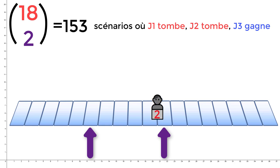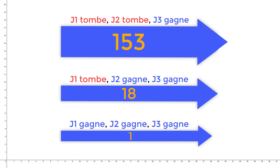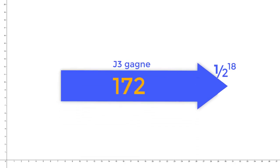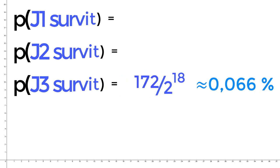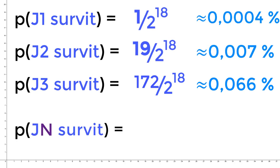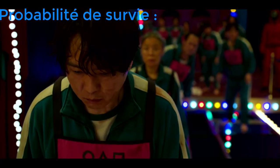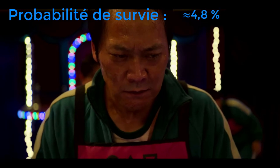Ce nombre, c'est donc très précisément le nombre de scénarios différents où les deux premiers candidats vont tous les deux tomber. Un tel scénario est en effet uniquement défini par les deux plaques qui céderont sous le poids des deux malheureux candidats. Il y a donc un seul scénario où personne ne tombe, 18 où seul le candidat numéro 1 tombe, et 153 où les deux premiers candidats tombent. Pour le candidat numéro 3, c'est donc 1 plus 18 plus 153, soit 172 scénarios de probabilité 1/2 à la puissance 18 où il survit. La victoire lui est donc assurée avec une probabilité de 172 sur 2 puissance 18, soit toujours trop peu pour ne pas perdre immédiatement espoir, à peine 0,06%. On peut alors généraliser tous ces calculs. Pour le candidat numéro n, sa probabilité de s'en sortir est donnée par la somme 1 plus 18 plus 153 plus etc. jusqu'à n moins 1 parmi 18. Le tout sur 2 puissance 18.